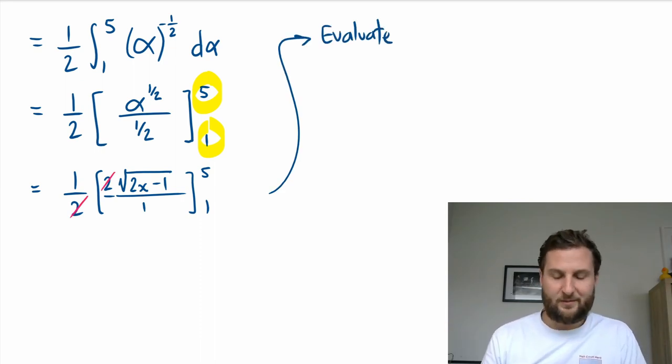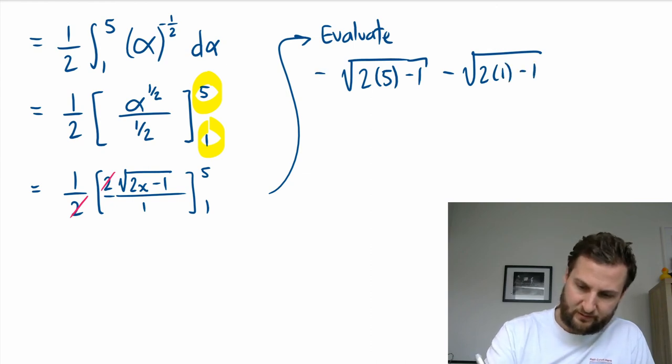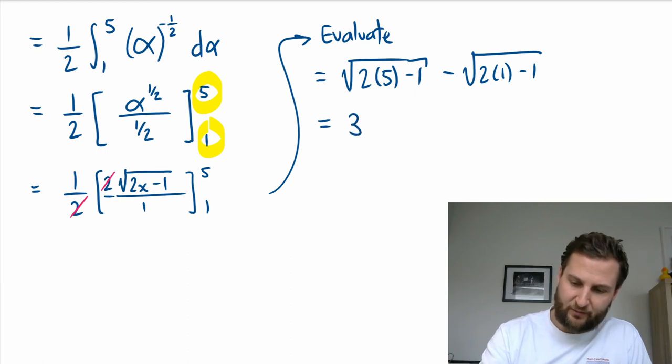All right, let's sub in some numbers and see what we get. So I'll sub in 5 first, so I'm going to get square root 2 times 5 minus 1, subtract square root 2 times 1 minus 1. So this is 10 minus 1, so root 9 is 3, and I have 2 minus 1, so root 1 is 1. 3 minus 1 equals...